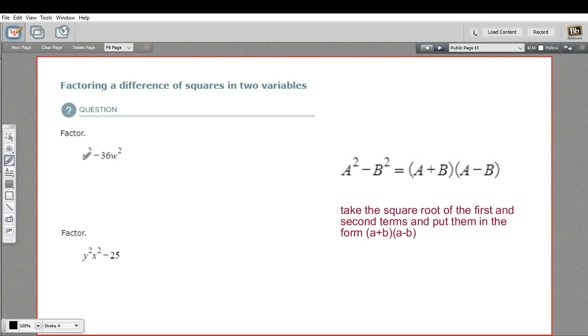In this first one, u squared, the square root of that is pretty easy. That's just u. In this one, we have a number part and a variable part, but that's okay. We can take the square root of both those parts and put them together. So the square root of 36 is 6, and the square root of w squared is w.